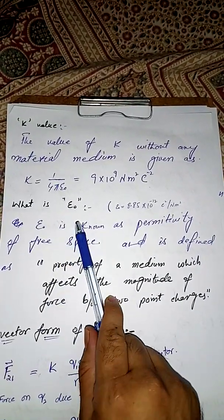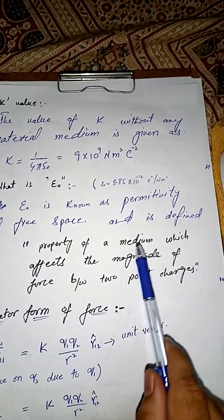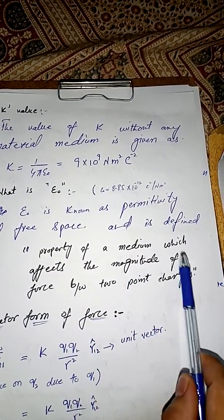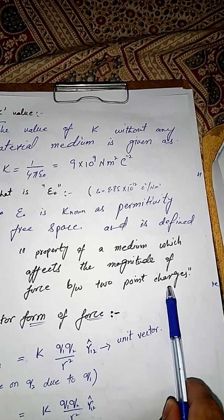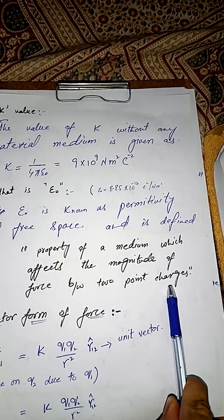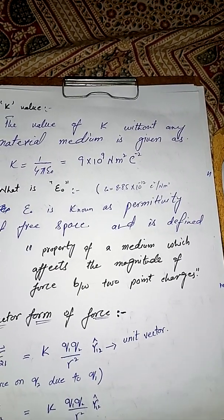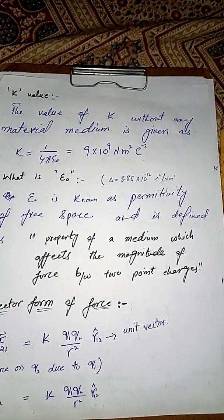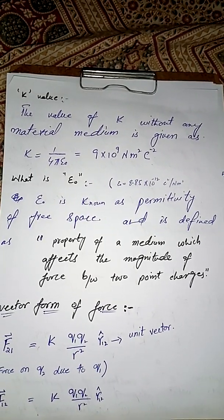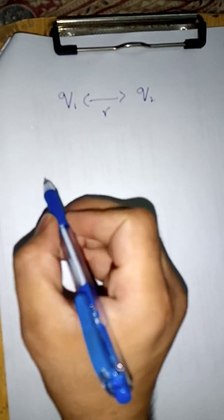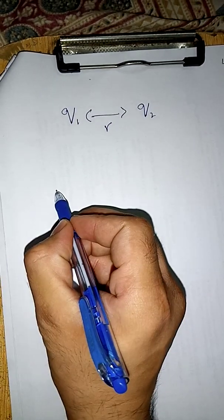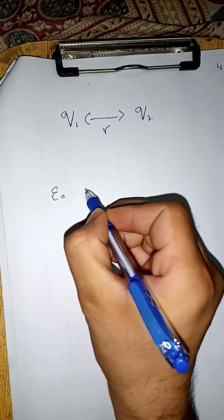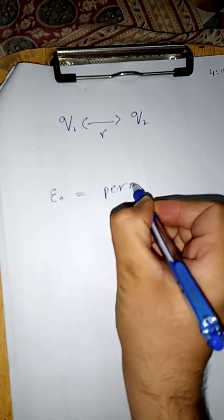We can define ε₀ as the property of the medium which affects the magnitude of force between the two charges. Before proceeding further, let's understand what ε₀ — the permittivity of free space — means.